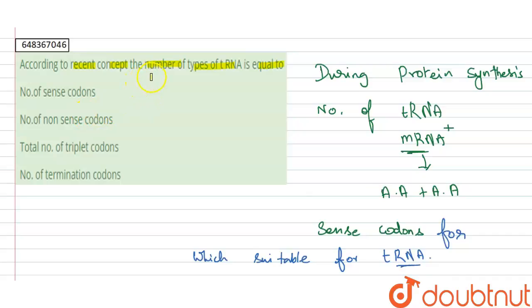According to the reason concept, the number of types of tRNA is equal to the number of sense codons. Other options are wrong statements against the tRNA. That's all, thank you.